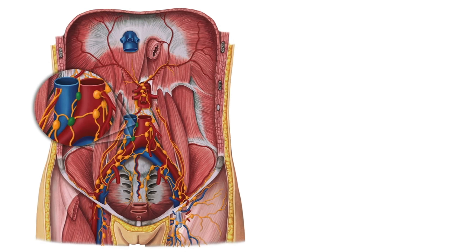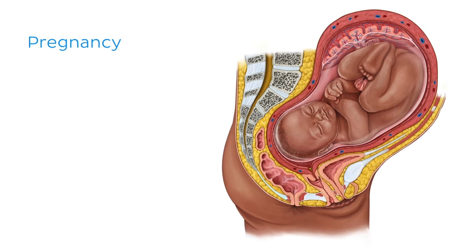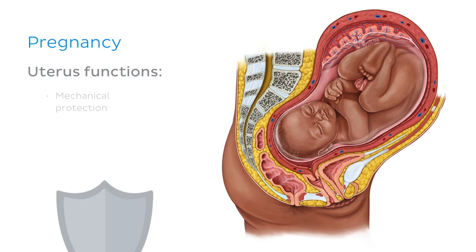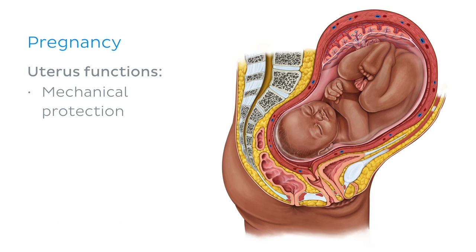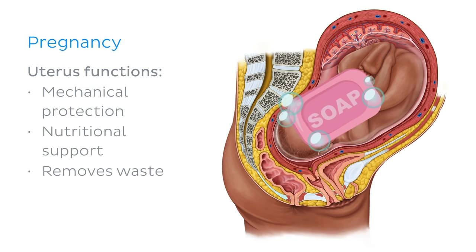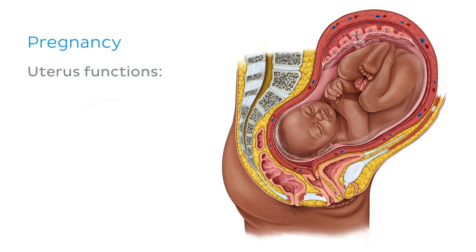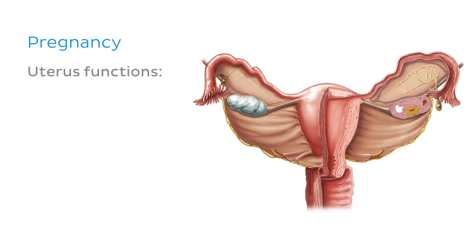It's time to move on to the functions of the uterus. Once a blastocyst has implanted in the body of the uterus, the uterus carries out various functions to aid the growth and development of the fetus. Firstly, it provides mechanical protection, preventing physical damage to the fetus. It also provides nutritional support, which is essential for growth, and removes waste, keeping the fetal environment clean. During pregnancy, the uterus expands up into the abdominal cavity as the baby grows. When the baby is ready, the muscular wall of the uterus contracts to help push the baby out at delivery. If fertilisation of the egg doesn't occur and there's no implantation of the blastocyst, the uterus will eventually shed its lining in a process known as menstruation.